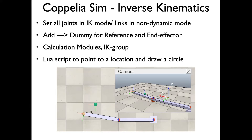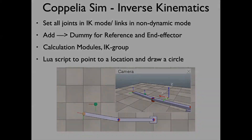The dummy is actually — there's one dummy for the reference, which is where you want the manipulator to be, and another dummy for the end effector. CoppeliaSim gets the end effector to go to the reference — that's how IK is done. I'll show you how to add the calculation modules, and then a Lua script to move the dummy and hence the end effector wherever you want. Let's get started.